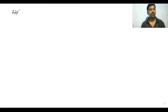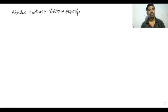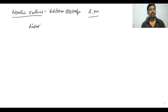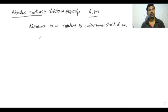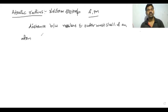Good morning students. Today we will look at atomic radius — atomic radius in groups and periods. The atomic radius is generally measured in angstrom units or picometers. Atomic radius is defined as the distance between the nucleus and the outermost shell, or valence shell, of an atom.